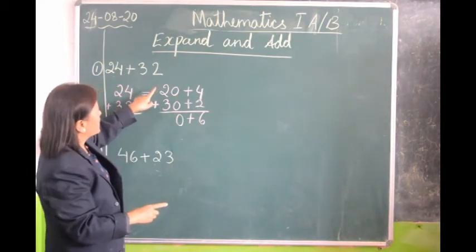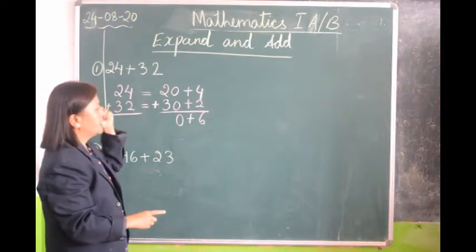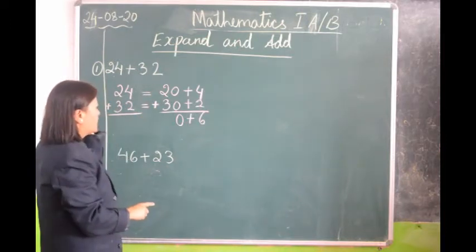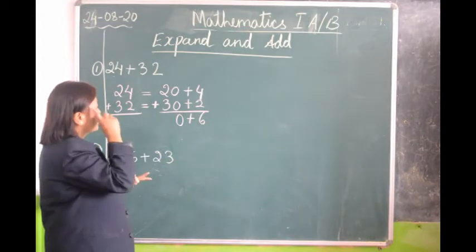Now we will add these two numbers, 2 plus 3. We will keep the bigger number on the head, 3, and 2 in our finger. 3, 4, 5.